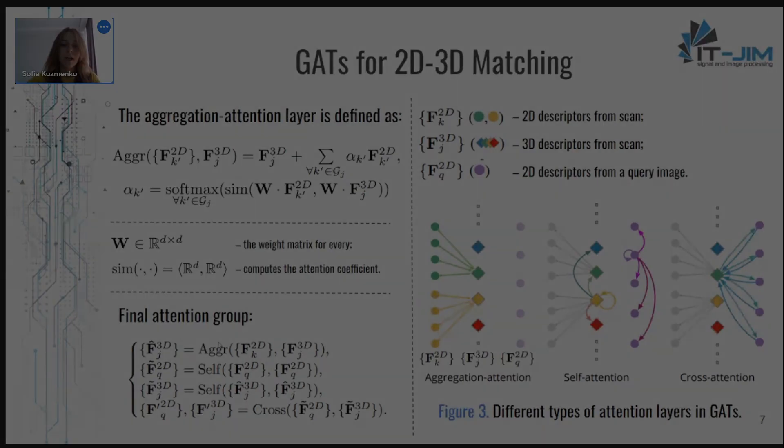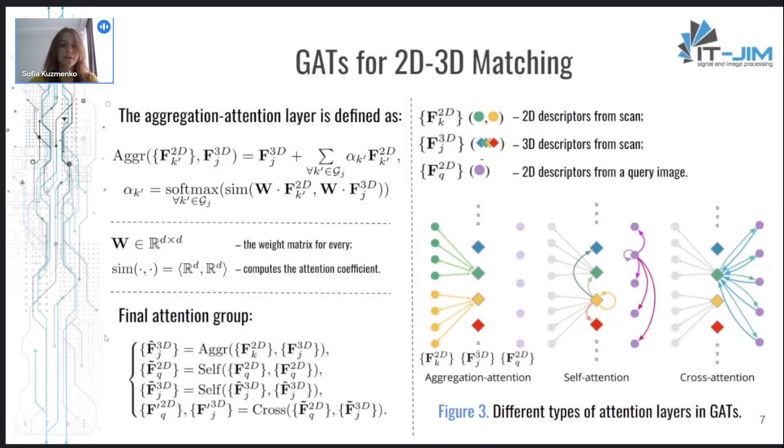I guess all these formulas look messy. Therefore, I propose you to have a look at the figure where the main intuition of each of these attention types is to choose the most relevant features.